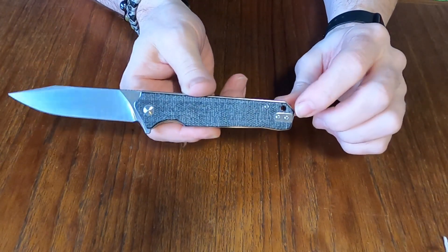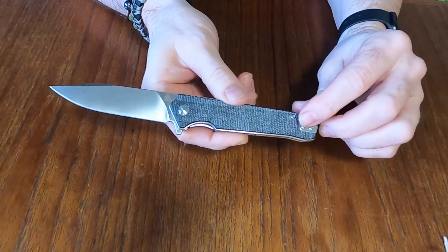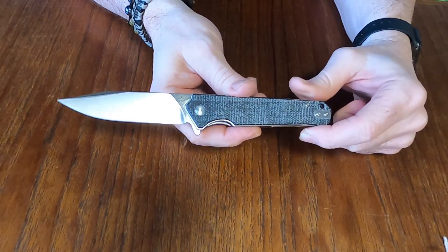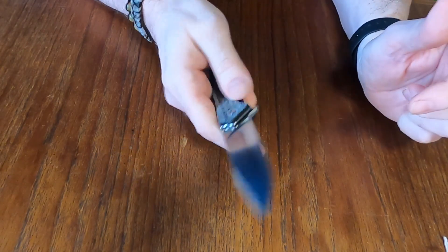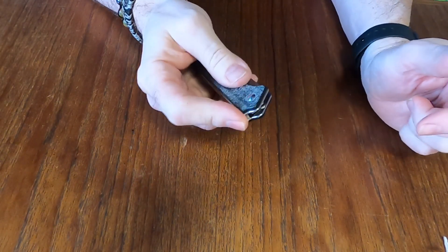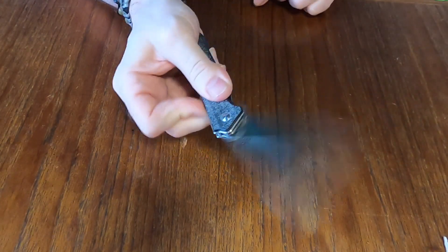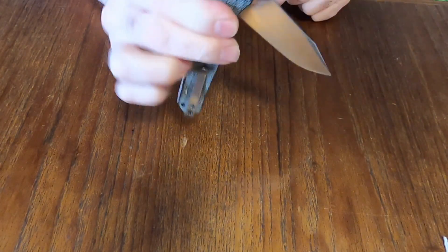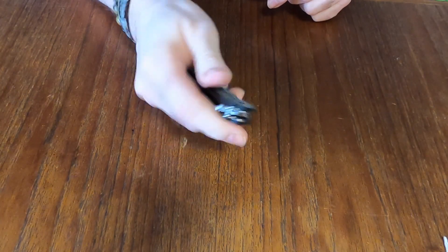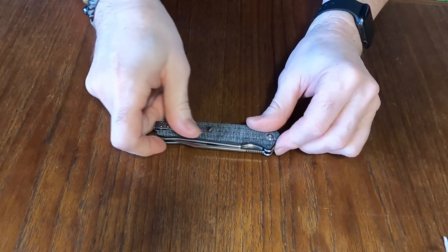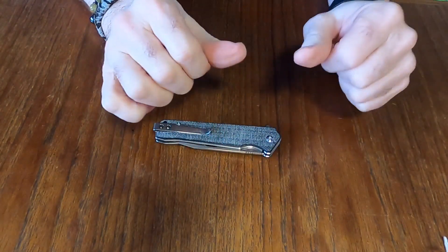They do have the lanyard hole at the back for those of you who like to throw a lanyard on your knife. It does come with ceramic ball bearings so quite a smooth pivot on it. Not quite drop close but it doesn't take a lot of effort to close the knife either. This is the QSP Mamba.